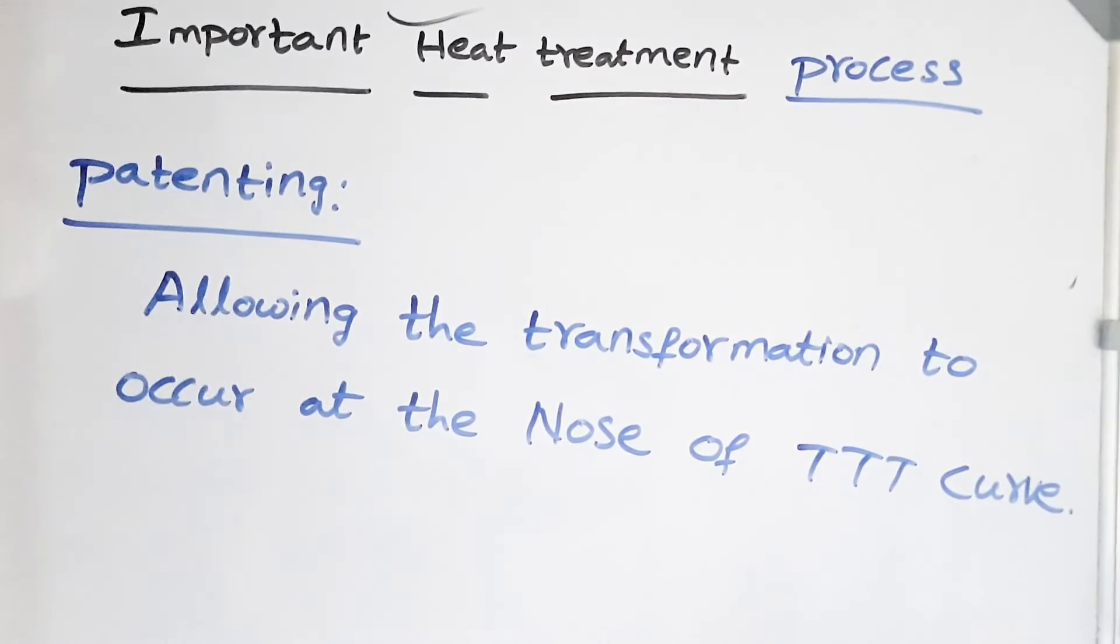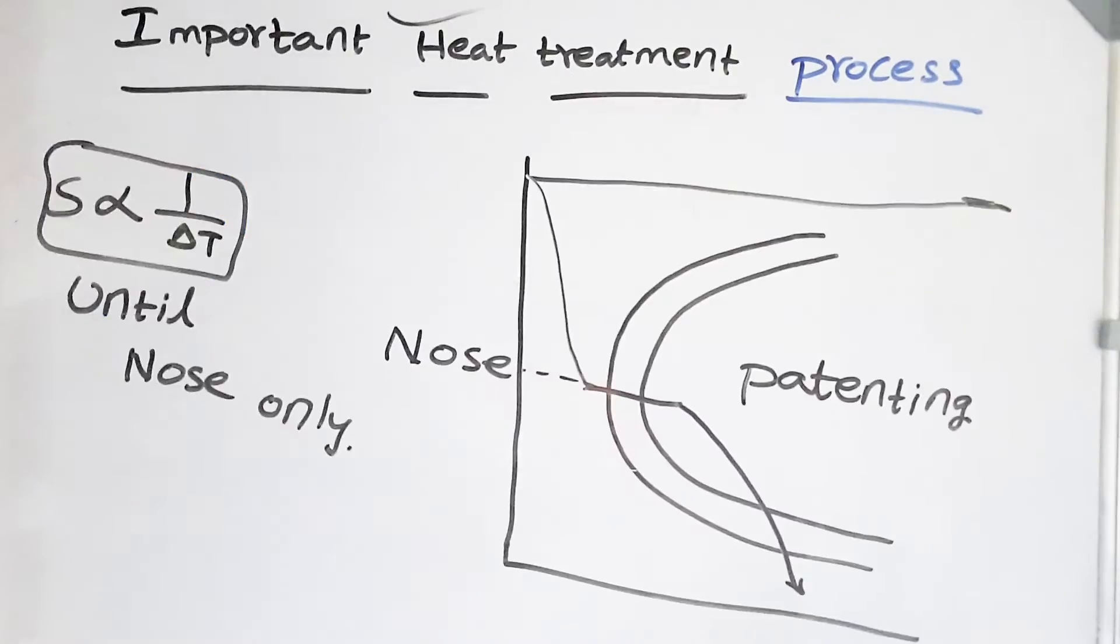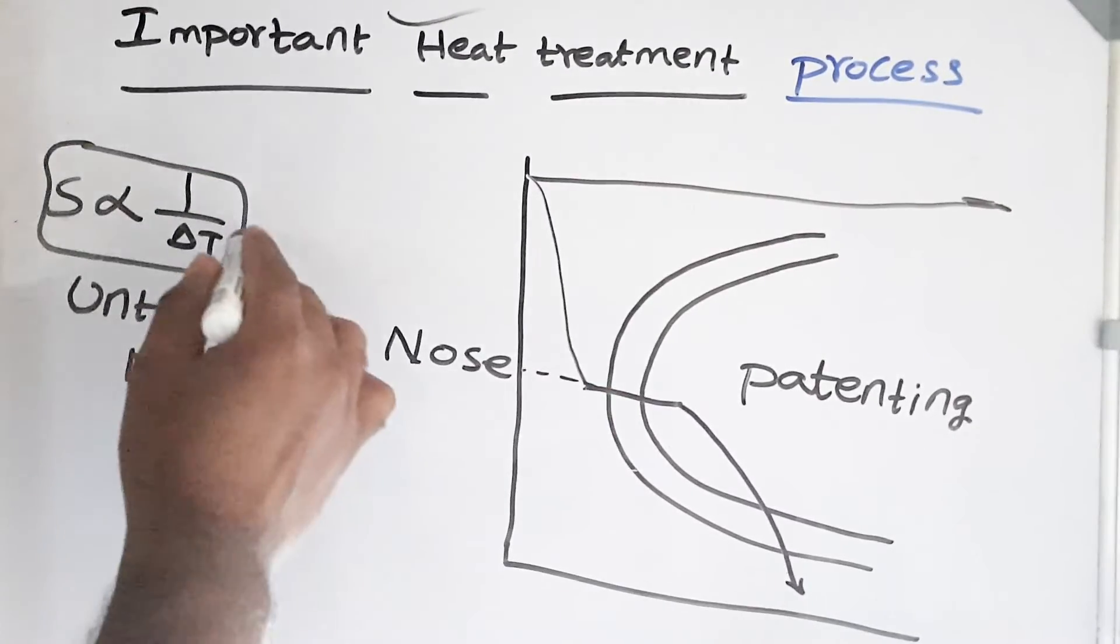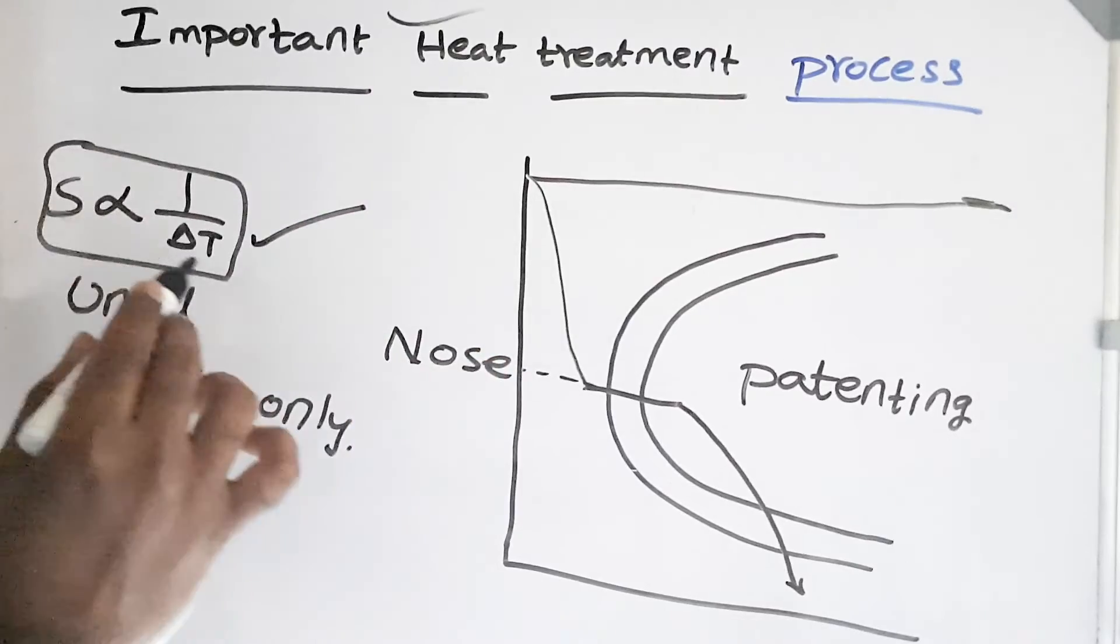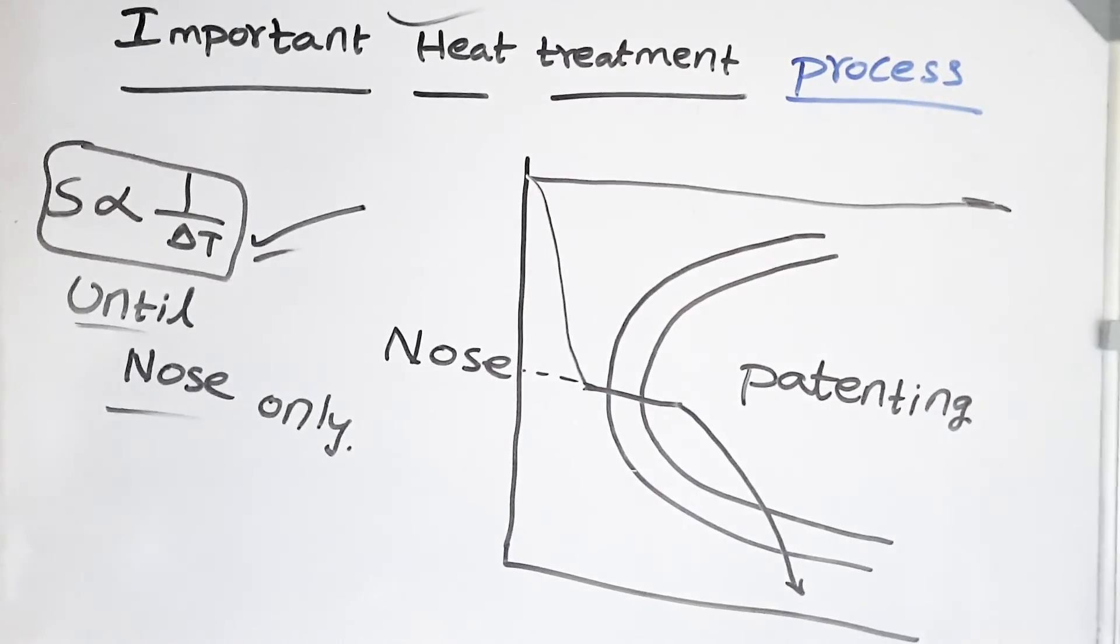Friends, patenting is a heat treatment where we allow our steel to transform at the nose of the TTT curve. So the complete transformation occurs at the nose of the TTT curve. Hence, giving the finest structures, troostite and sorbite. Hence, these finest structures are used in the generation of piano wire. It is one of its applications. Friends, I hope you understood the process patenting and we should always remember interlamellar spacing is inversely proportional to the cooling until the nose of the TTT curve only. Thank you so much for watching. Have a nice day.